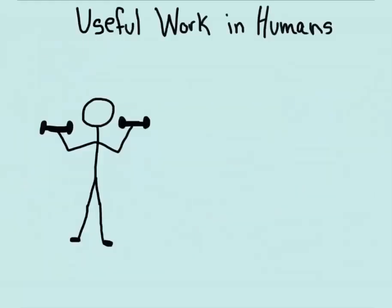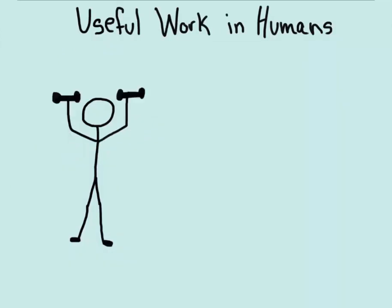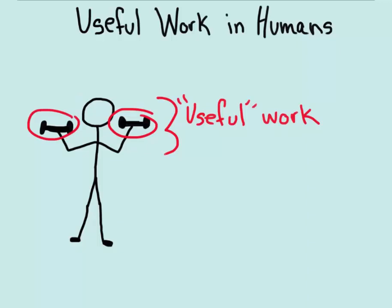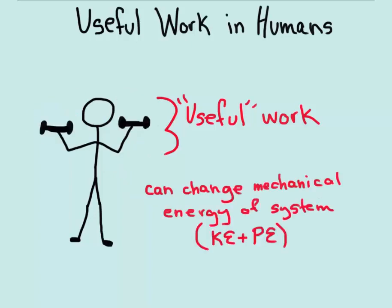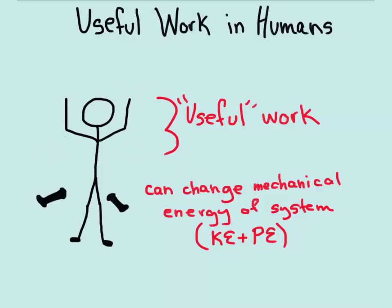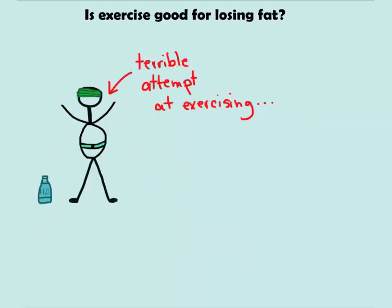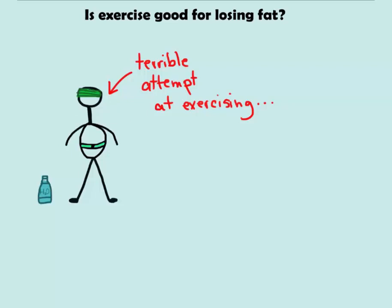Now that we have covered metabolism, we can discuss useful work in humans, such as lifting weights. Lifting weights is a form of mechanical work and does not include internal work, such as the work done by the heart and lungs. Going back to energy — is exercise good for losing fat? If you need more energy, such as when you exercise, your body uses the chemical energy stored in fat.